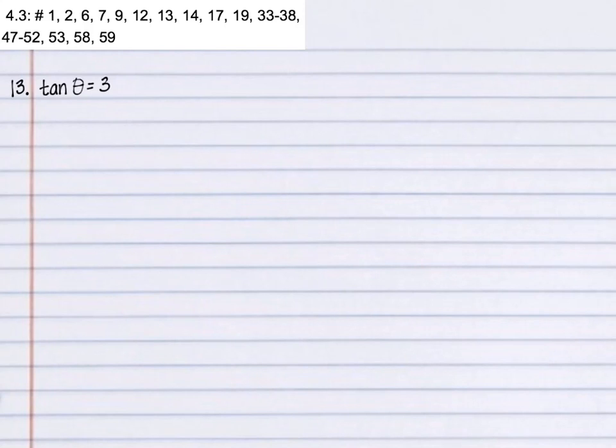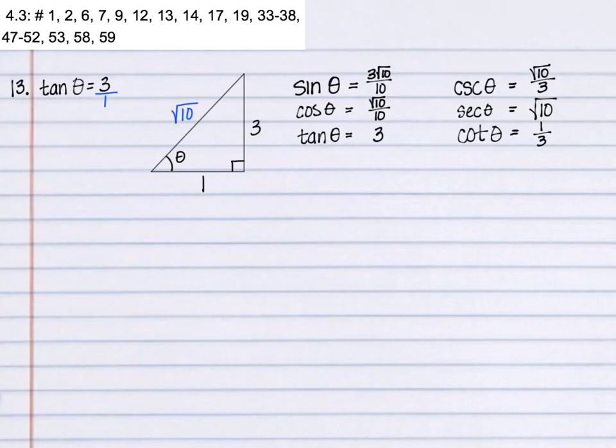Then we have tangent. Now this is a little bit different, so I'm going to look at that as it's really 3 over 1. And tangent is the y over the x, so it would be the opposite over the adjacent, excuse me. Find the third side and write your trigonometric functions.